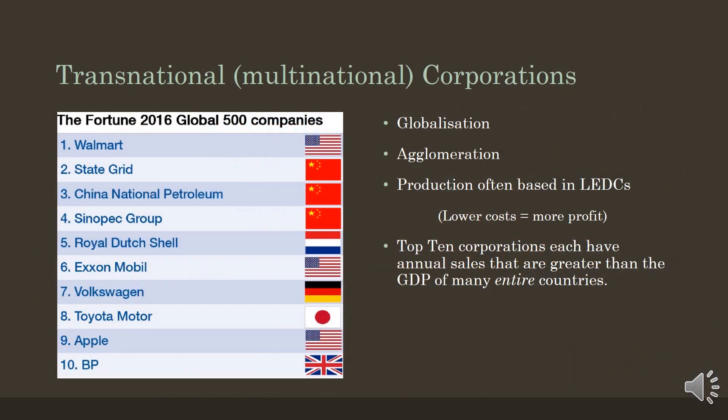The impact of globalisation is very obvious in the emergence of middle income countries and in the growth of transnational companies. Transnational companies are companies operating in more than one country. They have looked to lower income countries and middle income countries in order to cut their costs and increase their profits, leading to a process called global shift. This is because transnational companies are searching for the cheapest locations to manufacture and assemble components, so that the low cost, labour-intensive parts of the manufacturing process are moved to lower income countries where costs are much lower than in higher income countries.